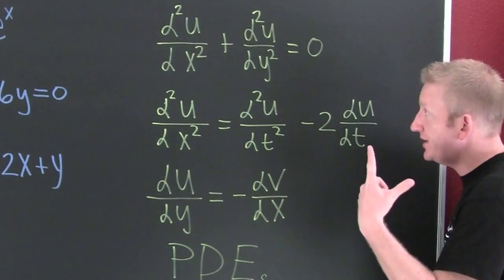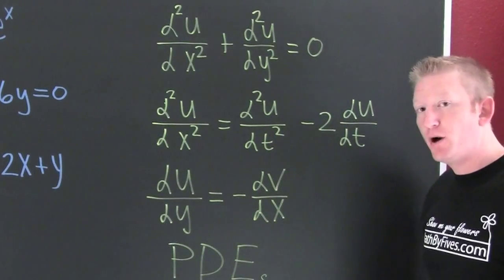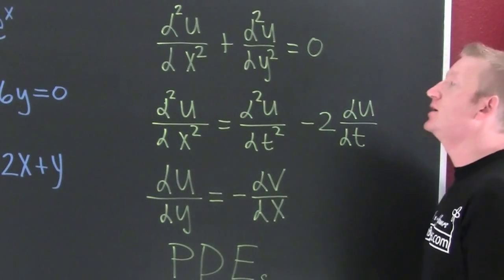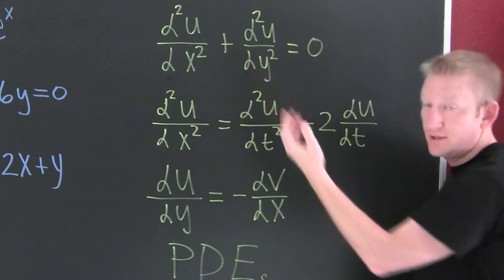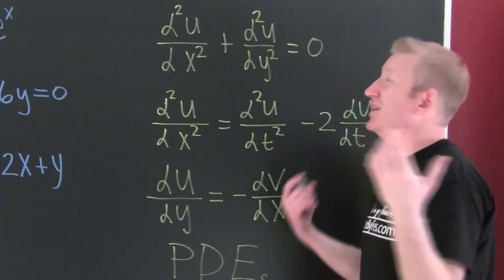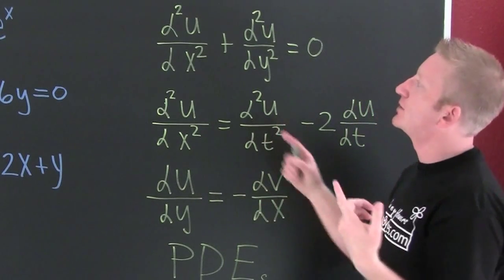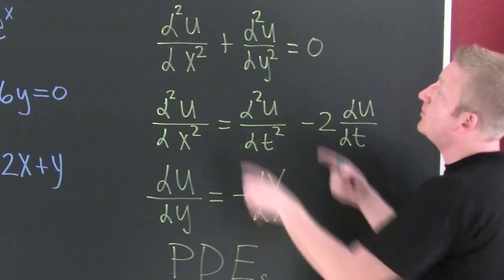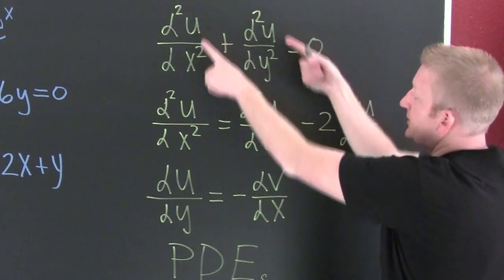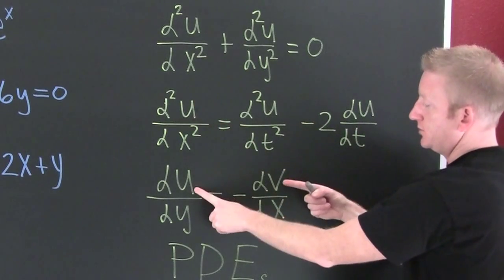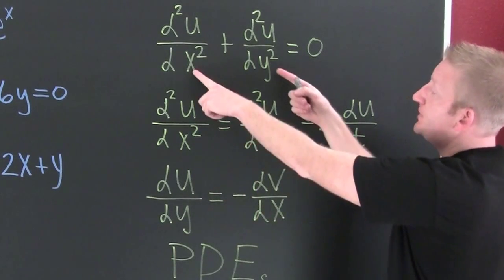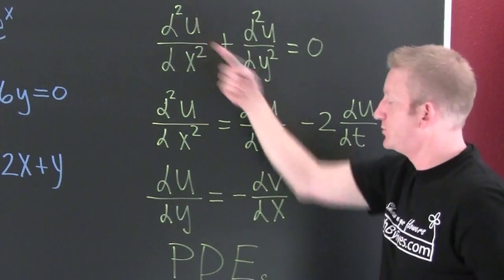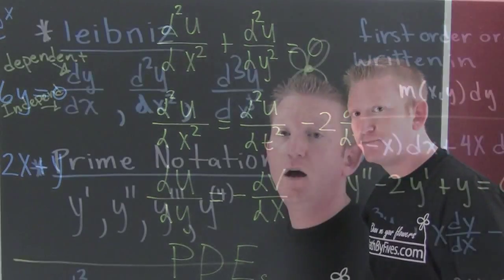Over here we have the PDEs — the partial differential equations. What do you need for partial differential equations? You need partial derivatives — that partial derivative symbol. What do we need? We need one or more dependent variables, and we need two or more independent variables. And we need partial derivatives. And that's what makes a PDE.